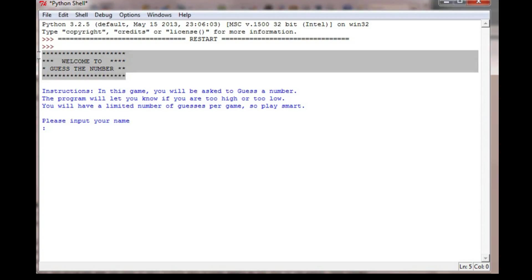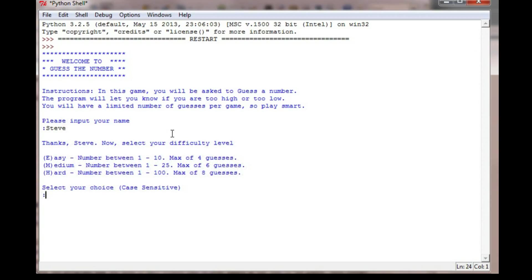You can see up here I printed a little menu or a little introduction using some asterisks to give it some flair and some instructions. So in this game, you'll be asked to guess a number. The program will let you know if you're too high or too low. You'll have a limited number of guesses, so play smart. So enter your name. I'm going to enter Steve as my name. Thanks, Steve. Now select your difficulty level, and it prints up another menu. Easy is a number between 1 and 10 with 4 guesses. Medium between 1 and 25 with 6 guesses. And Hard between 1 and 100 with 8 guesses. So we're going to start out with an easy game.